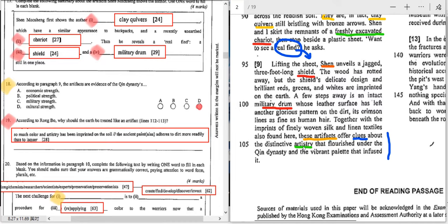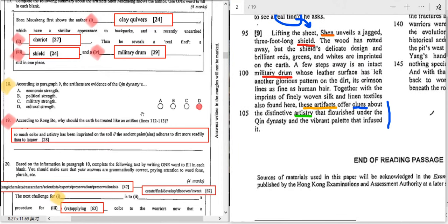These artifacts offer clues about the distinctive artistry that flourished under the Qing dynasty. If you go back to ABCD, the choice is there. There is one word that tells me the answer, and the word is artistry. Even though you know nothing about distinctive, flourished, very difficult words, vibrant palette, at least you can guess from this word artistry, art, culture. And therefore, it brings us to the answer D, cultural strength. That's how you do it. That's the trick.